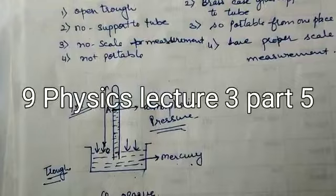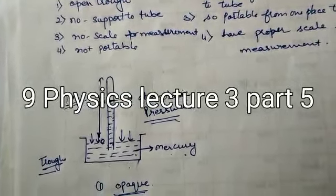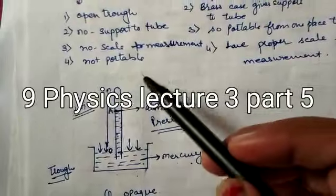If it is 1 meter long, it needs some support to be handled. Otherwise, it fall down and our simple barometer is being damaged. So, the thing is, tube is not having any support. Third is, we don't have any scale for measurement.